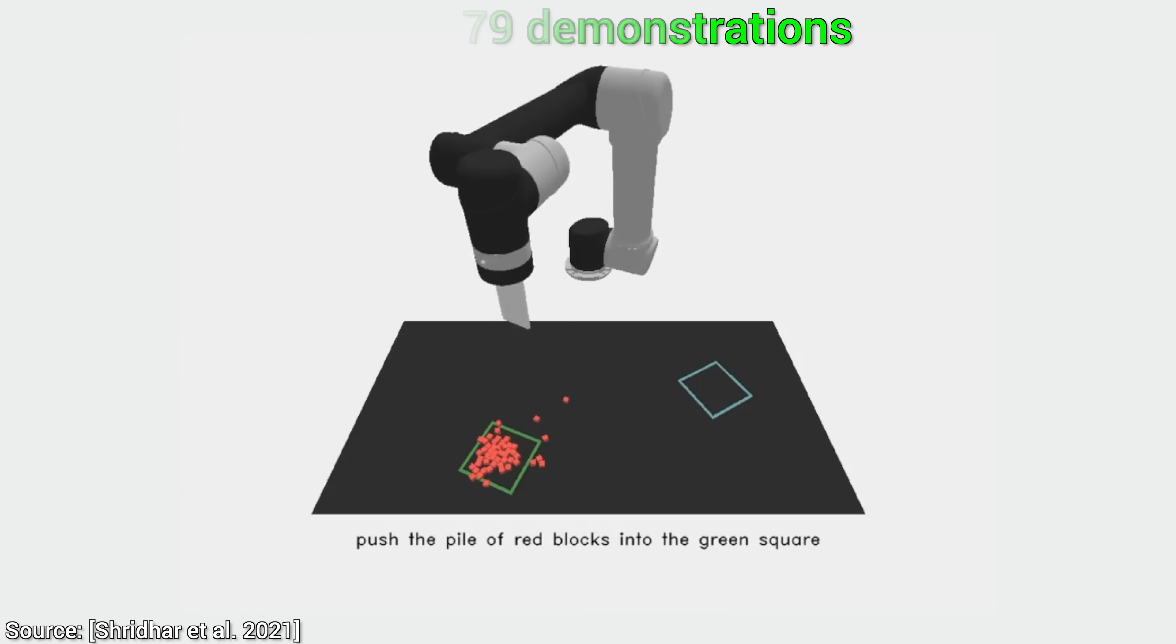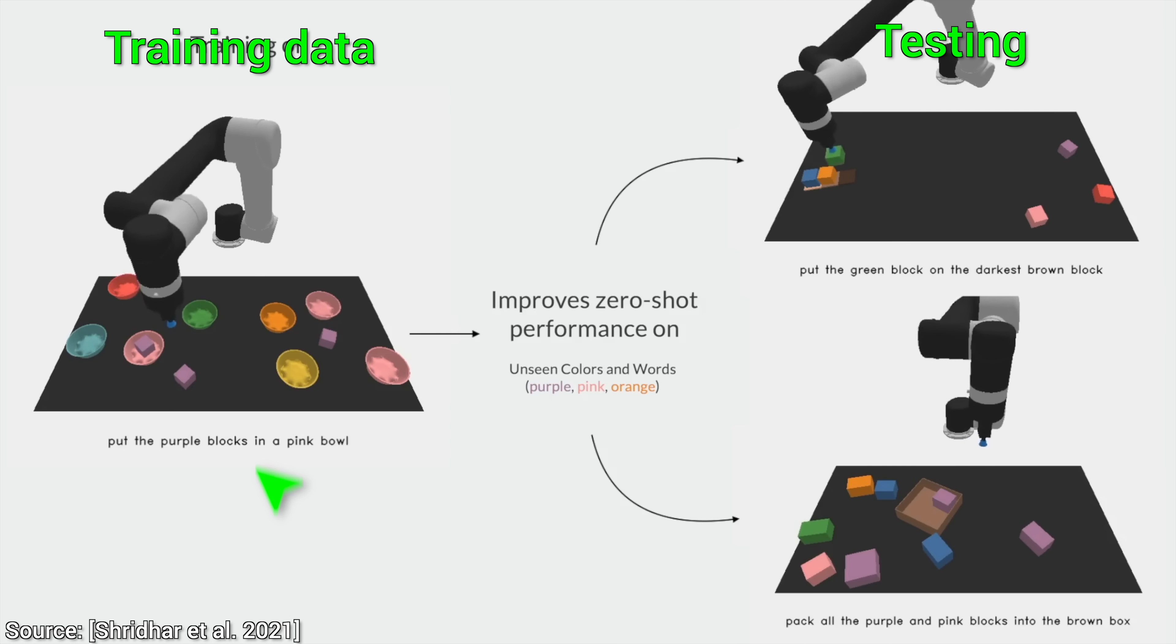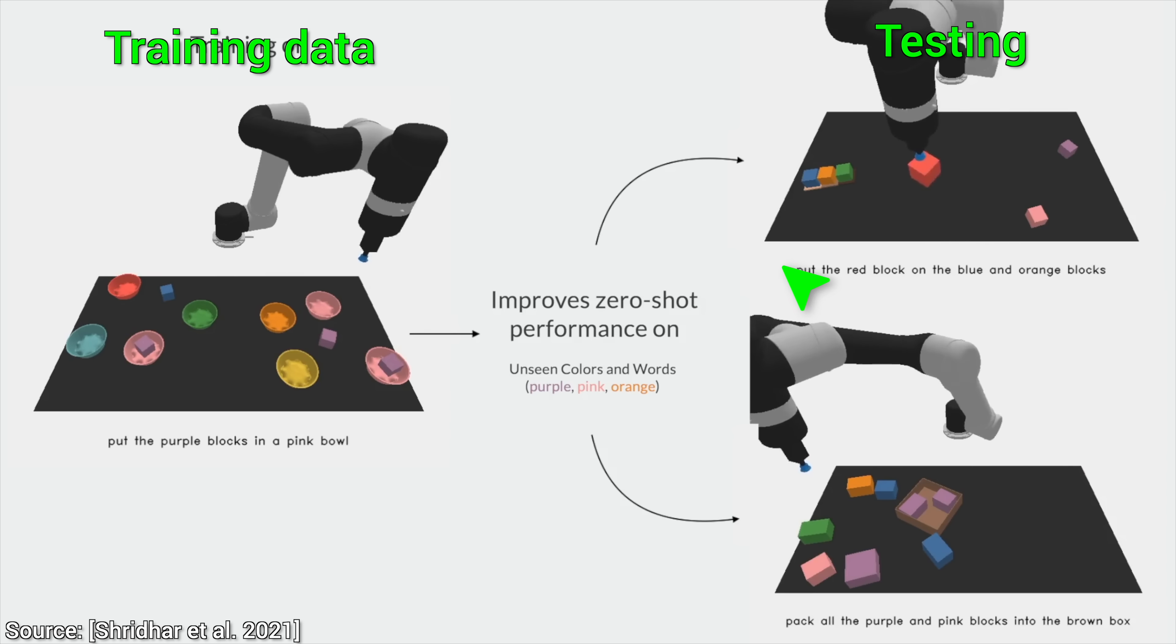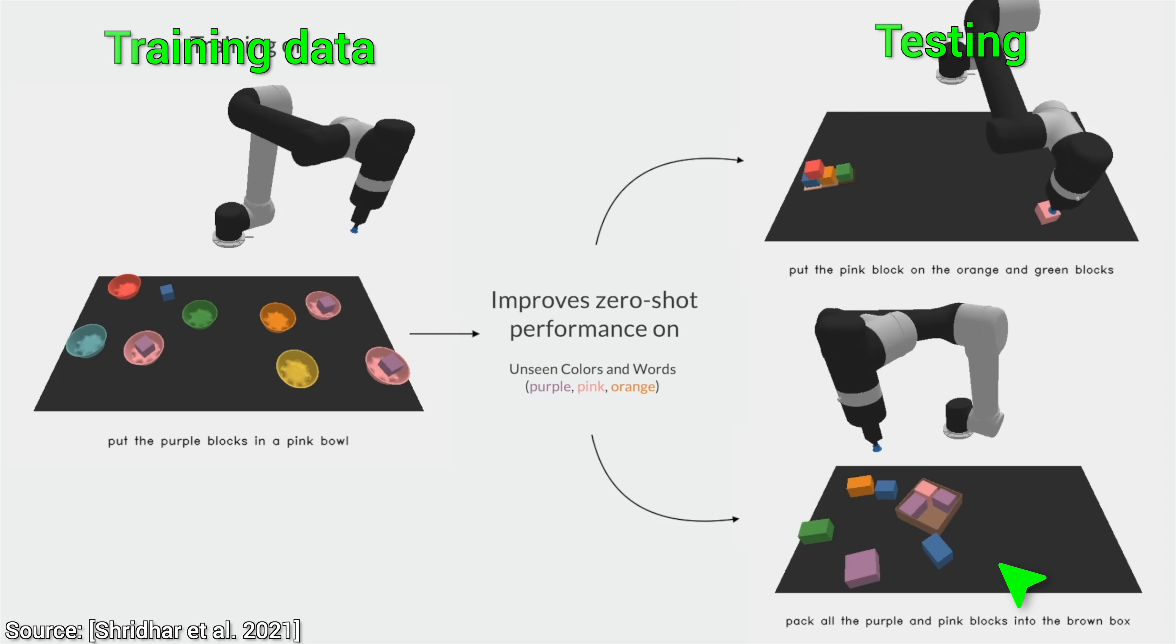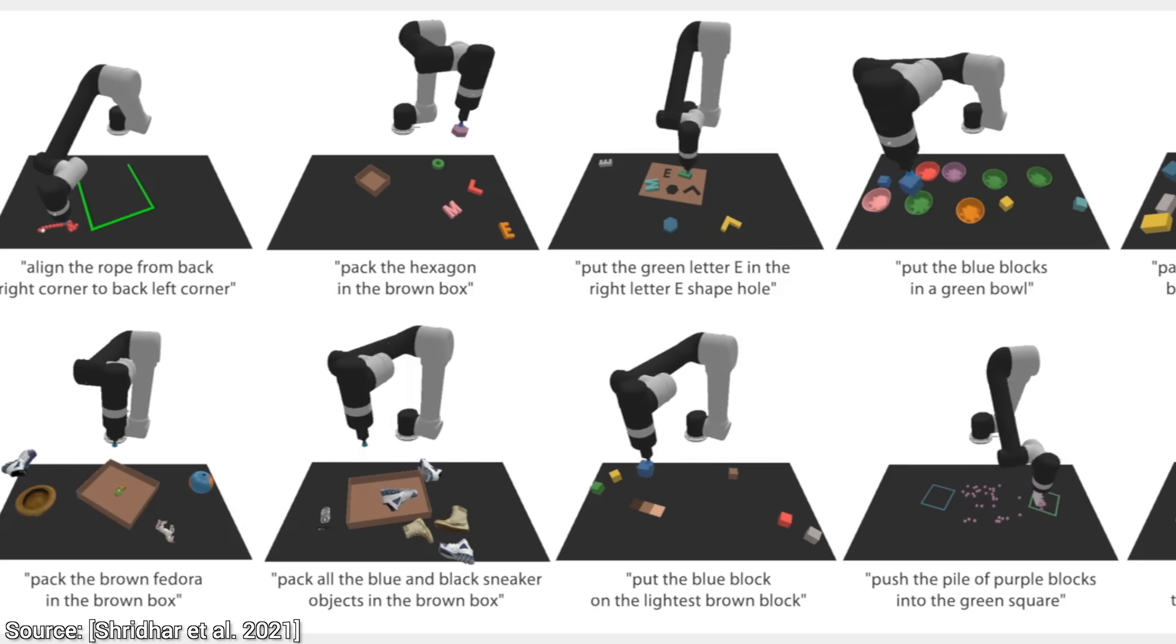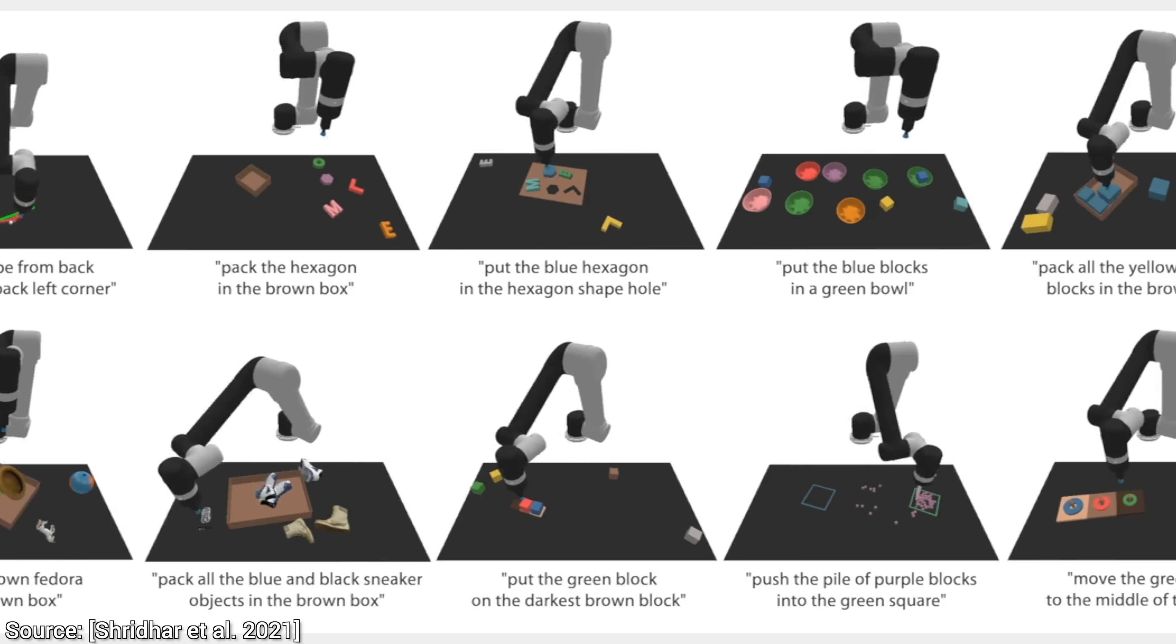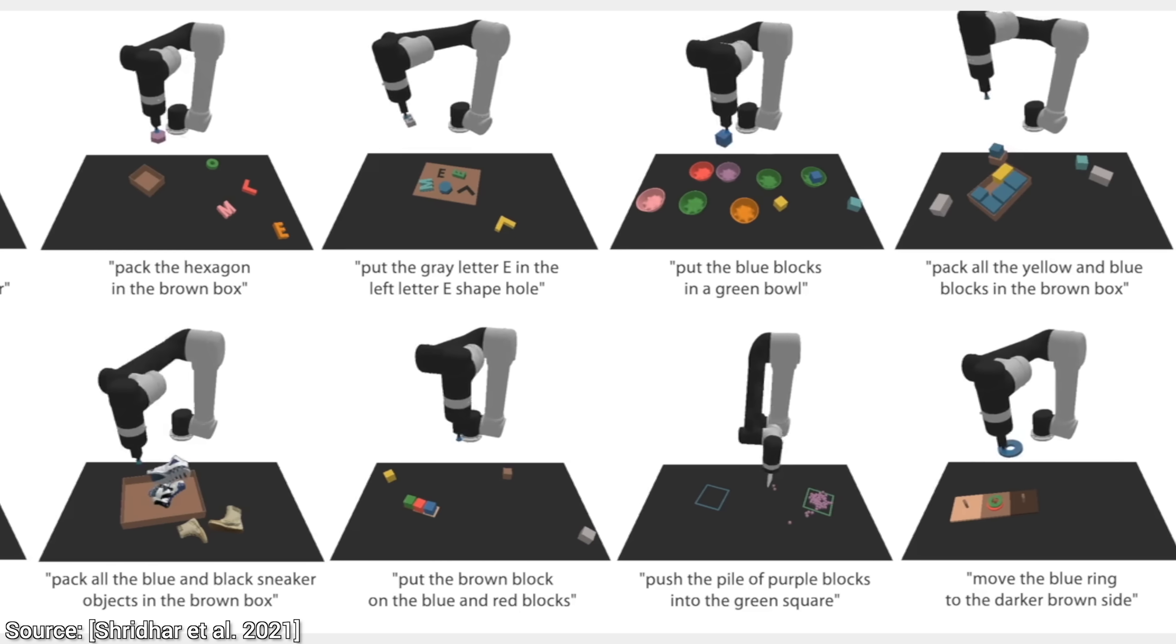And it gets better, one of the most mind-blowing results is that from these very few examples, it also learned to deal with previously unseen colors and words. And not only that, but it was also able to learn a wide variety of tasks from these 179 examples. And its capabilities just keep going on and on and on.